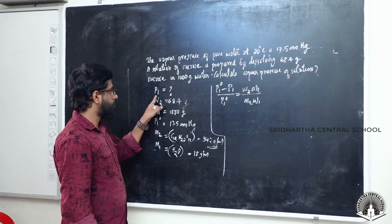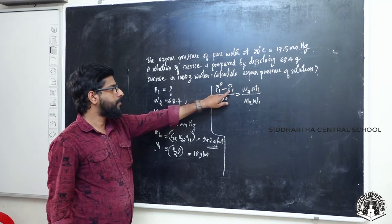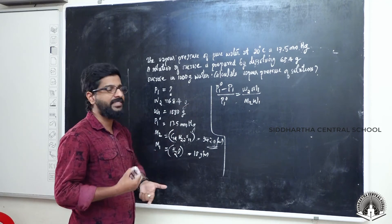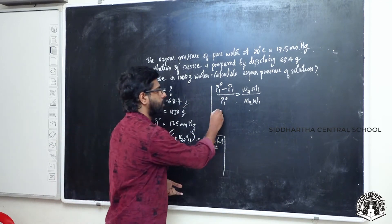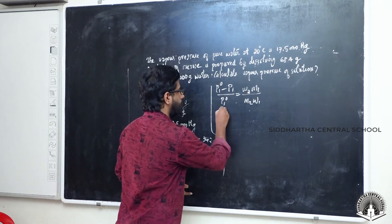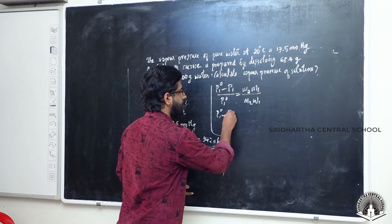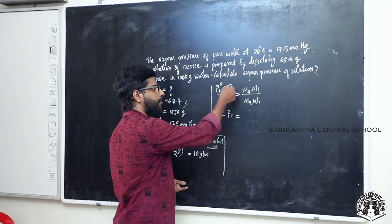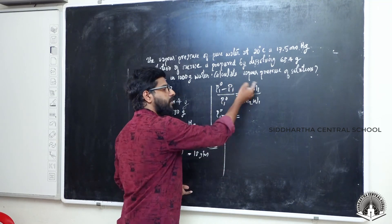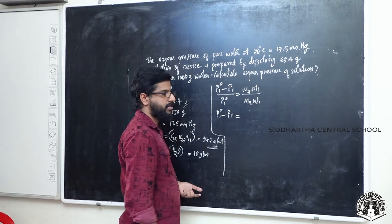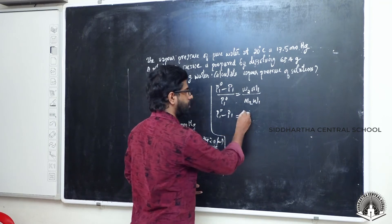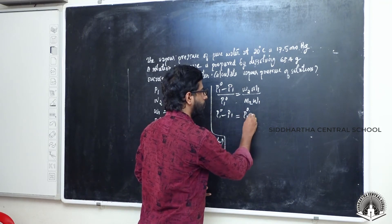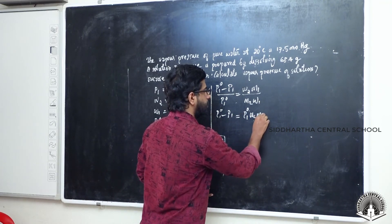We want to find out P1, so we can rearrange the expression. P1 equals P1⁰ minus P1⁰ multiplied by (W2 × M1) divided by (M2 × W1).